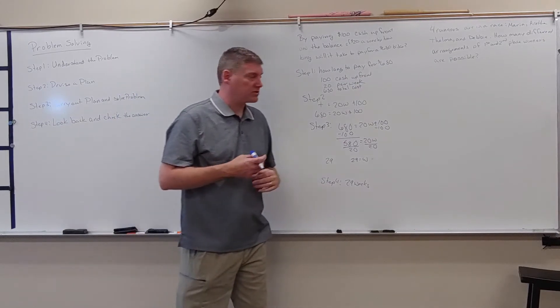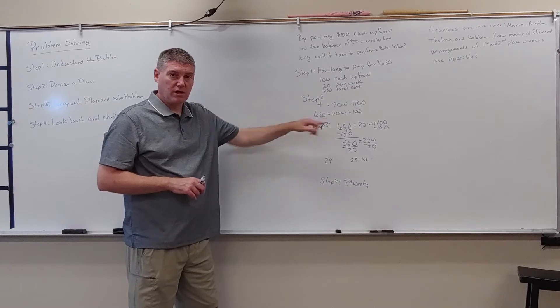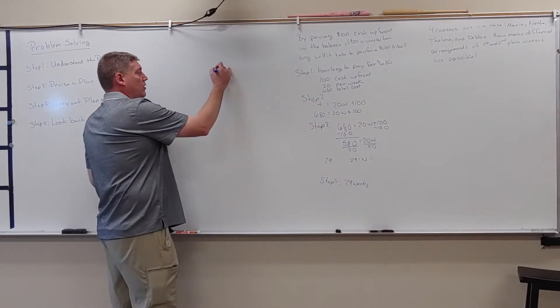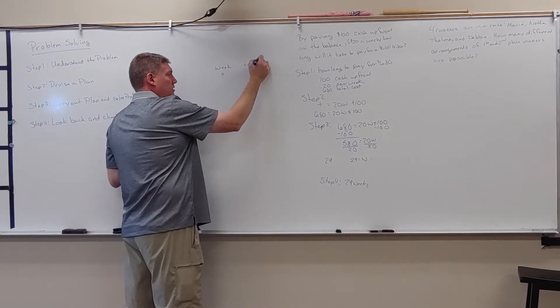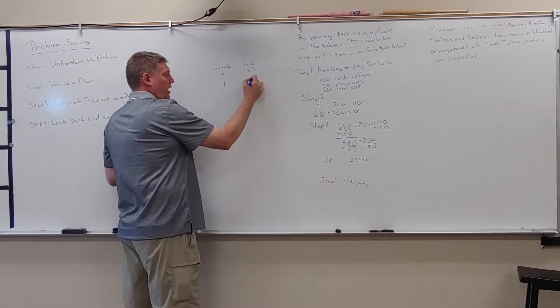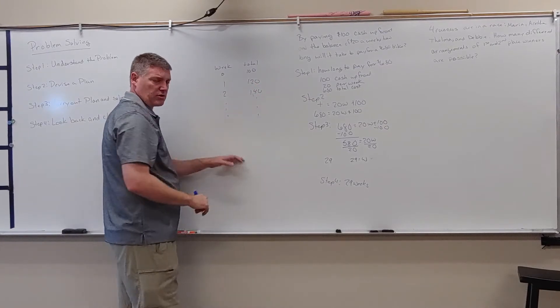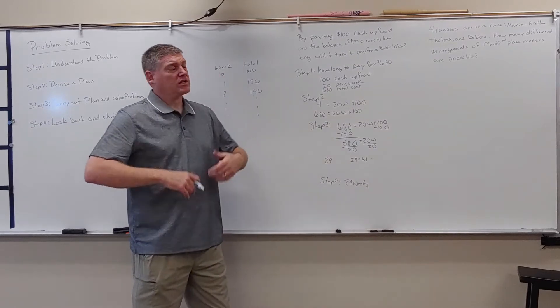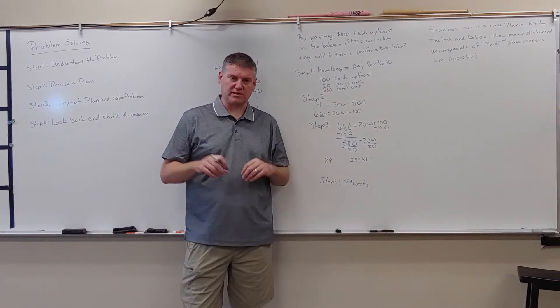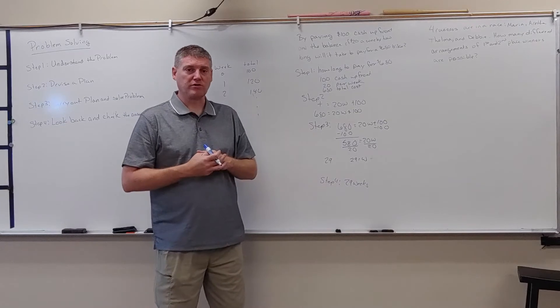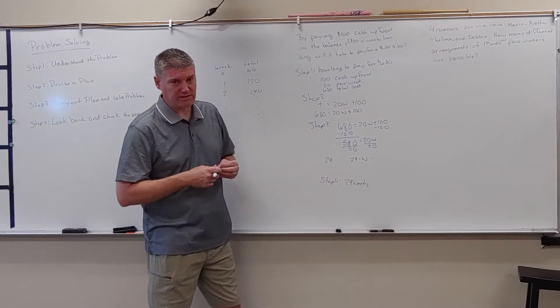Now, one of the things that, when you're solving these problems, there's lots of different ways to solve a problem. You could come up with an equation. You could have came up with a table. So we could have said week zero, total amount, we would have been 100. Week one, 120. Week two, 140. And then went all the way down until we equaled it up. So we could have created a table. Sometimes we can create a list. So understand that when you're working on these problems, just because you do it a certain way and somebody else does it a different way, both of those may be very adequate and get you to the exact same answer. So there's lots of ways to get to the same conclusion.